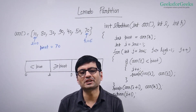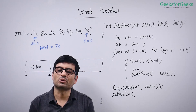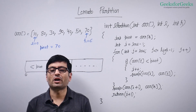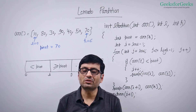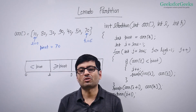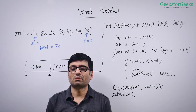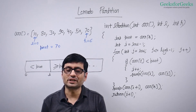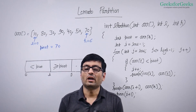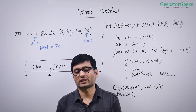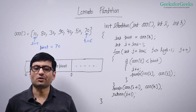In the previous video we talked about the naive approach to partition around a given pivot. In this video we are going to talk about Lomuto partition, which works by traversing the input array exactly once and requires constant extra space.